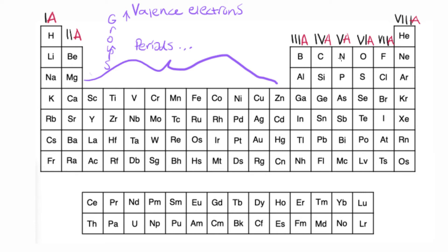4A has 4, 5A has 5, 6A has 6 valence electrons, 7A has 7 valence electrons. And then this last group right here, 8A, is going to have 8 valence electrons with the exception of helium, which has 2 valence electrons.